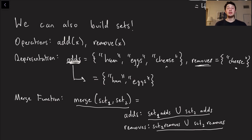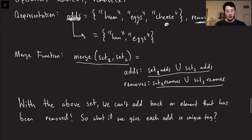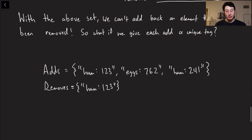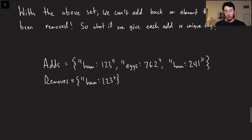Now, if you think about this, there actually is one issue with this representation, which is that once an element goes in the removes list, so cheese right here, it can never be re-added back to the set because I've said that the set is, you're basically, if cheese is ever present in the adds, you're always getting rid of it because it's in the remove set. So how can we do this where we're basically able to add an element back?